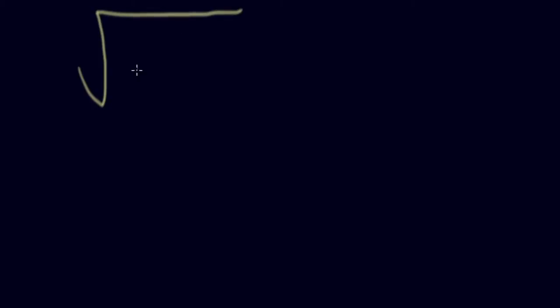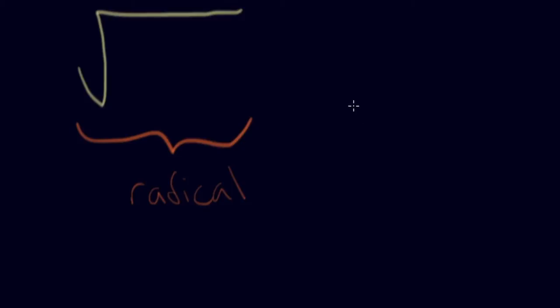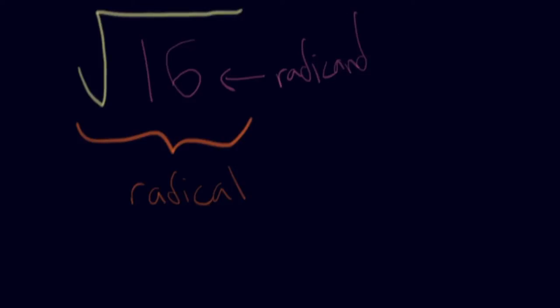What we're going to be talking about today are radicals — this thing right here — and we're going to find out what everything is called first. So this entire thing is going to be called a radical. You've probably seen something with radicals a little bit, and you're going to have numbers here, like a 16, and we call that the radicand. And then of course you also have the index. The index is right here, and this tells you what kind of radical it is.